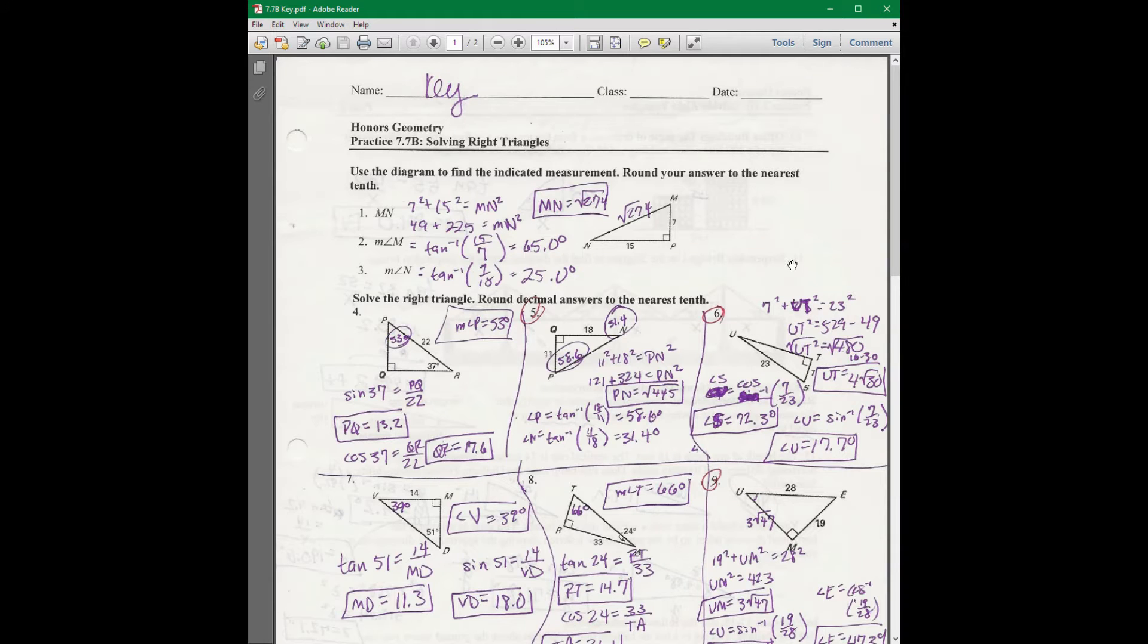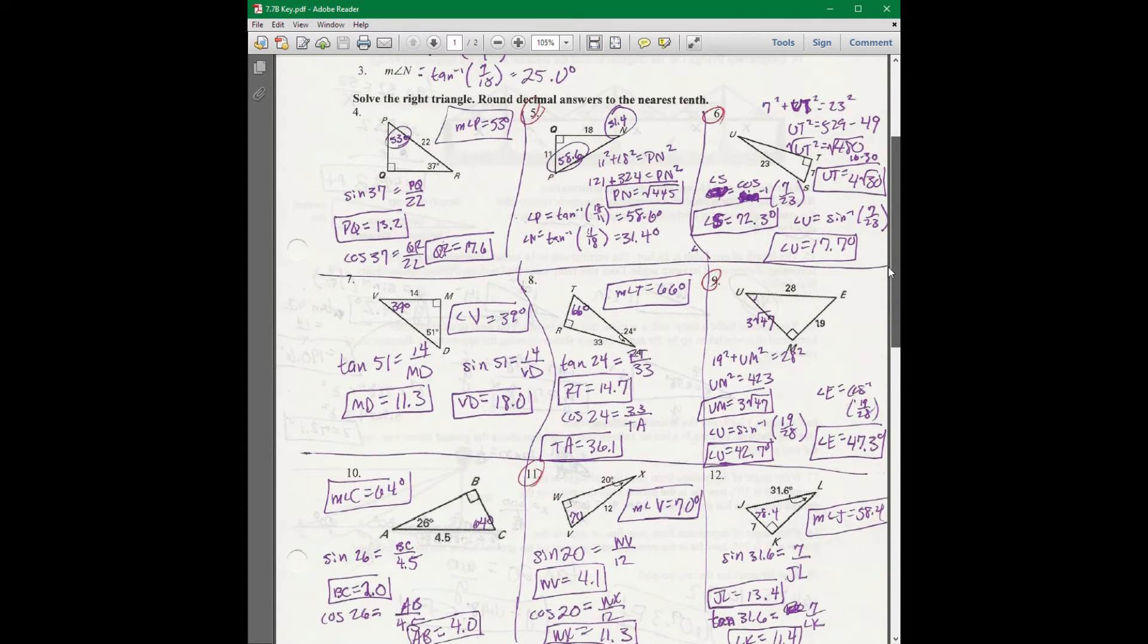Okay, for 7.7b, only do the numbers that were circled. I need to fix that. You only need to do numbers 5, 6, and 9 for the front. There's no reason to do all of these. Okay, and 11, 5, 6, 9, and 11.